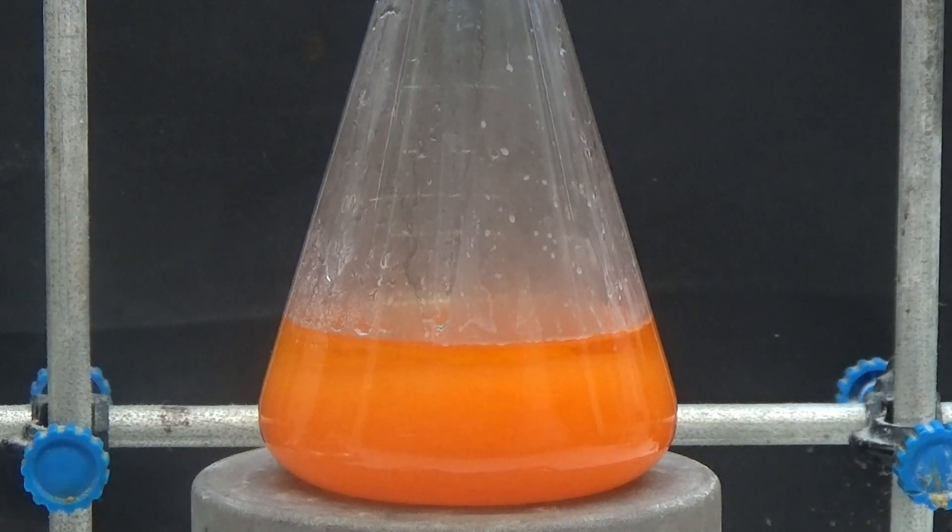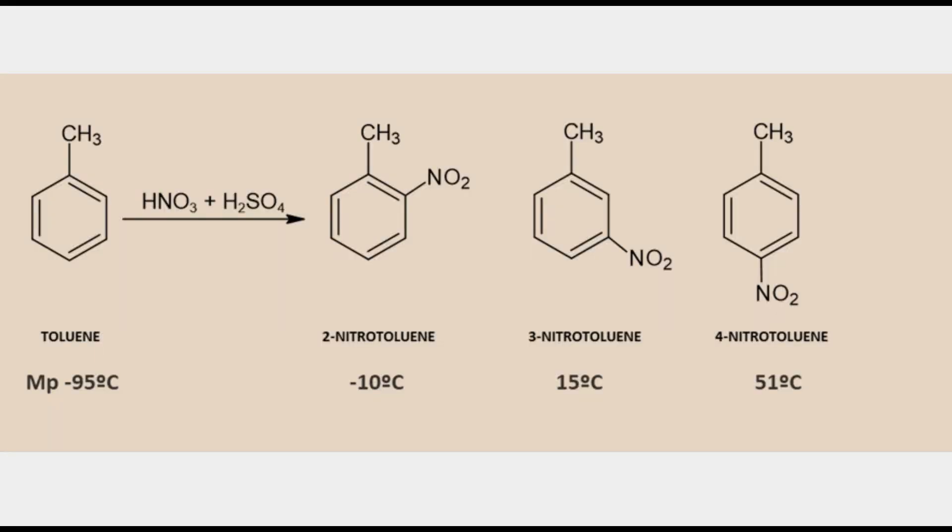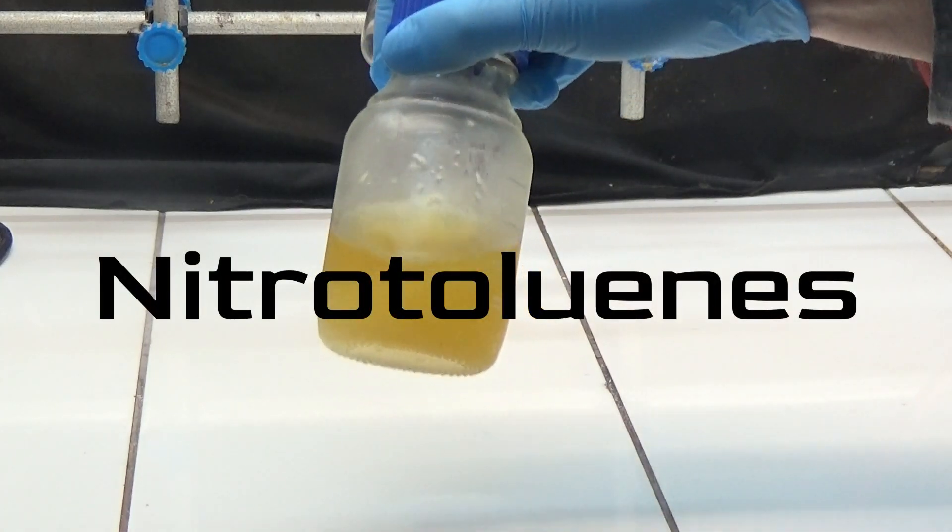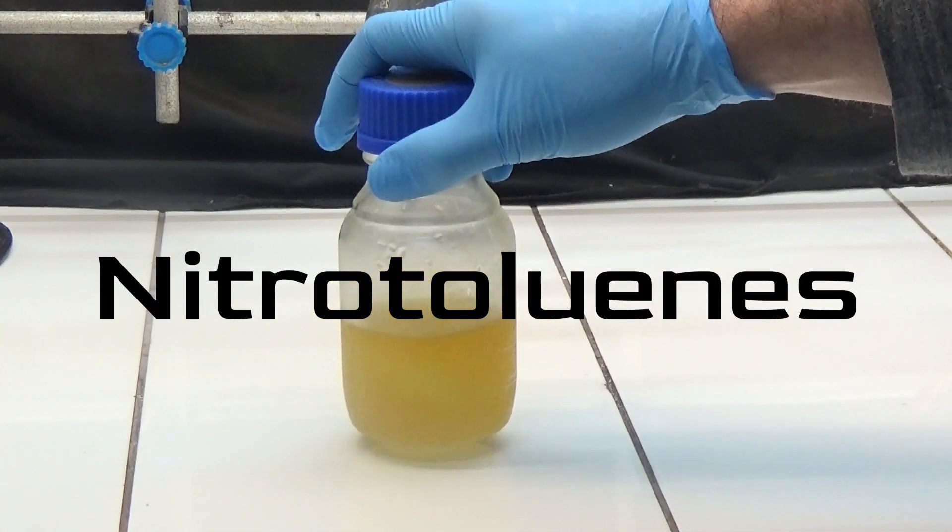After nitrating the toluene and washing it, several isomers have been obtained. These isomers have different melting points. The one I am interested in is orthonitrotoluene which has a melting point of 10 degrees below zero.